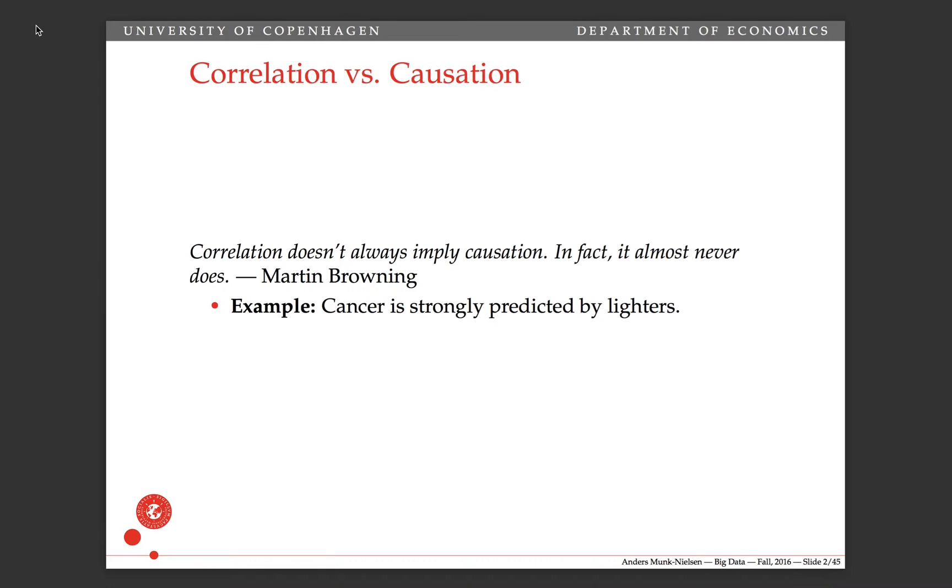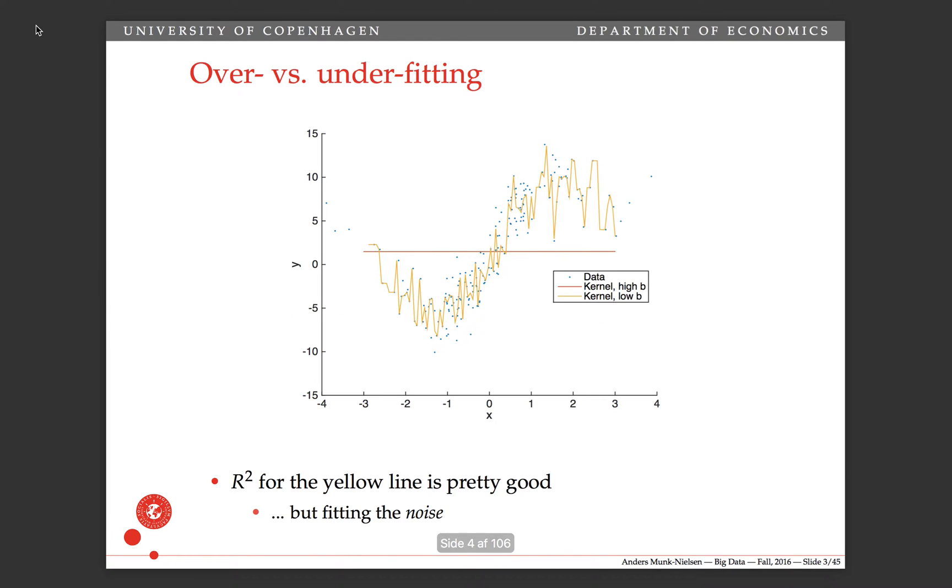If, for example, we want to predict who's going to get cancer because we want to find them and figure out how we can give them some treatment, then it might be fine just to know that there's a strong relationship between lighters and cancer. That might help us identify them. So sometimes we're interested in the correlations, and that's when the tools here are interesting.